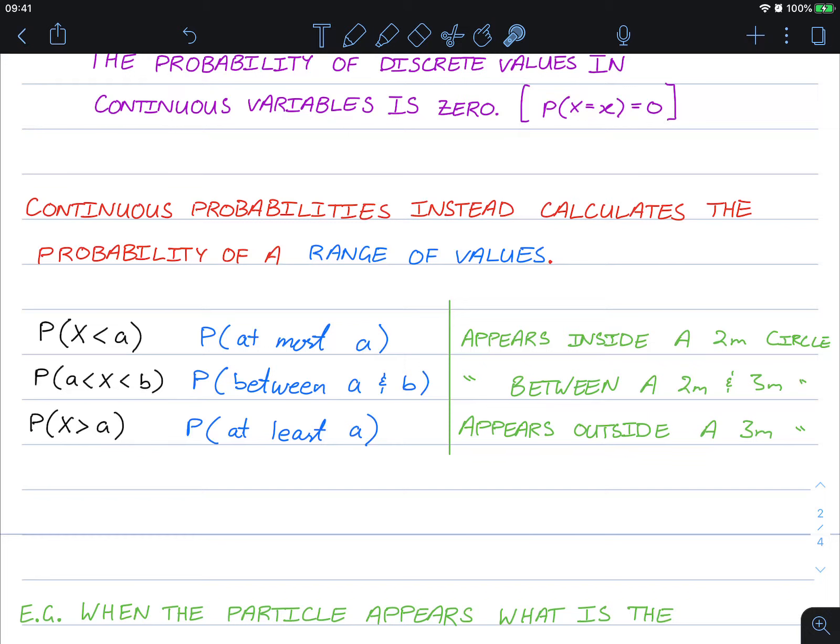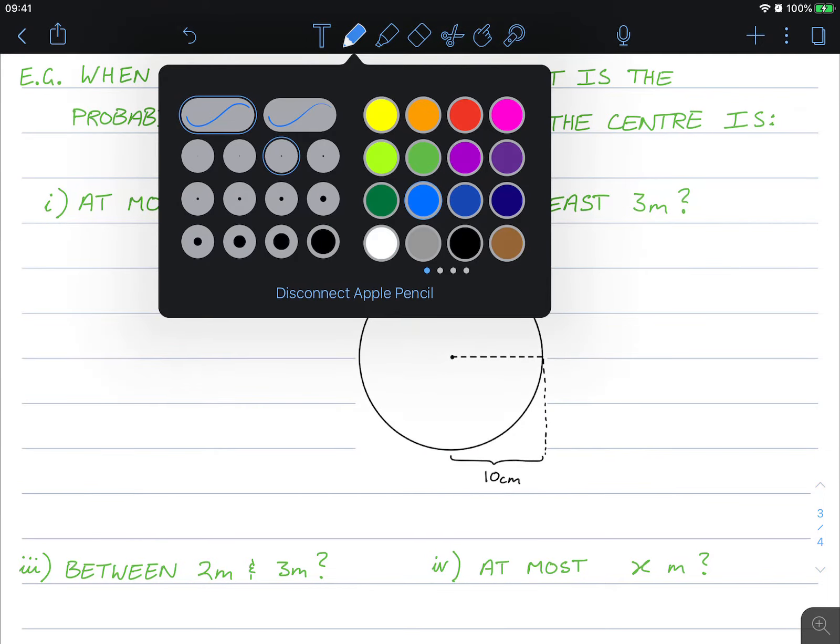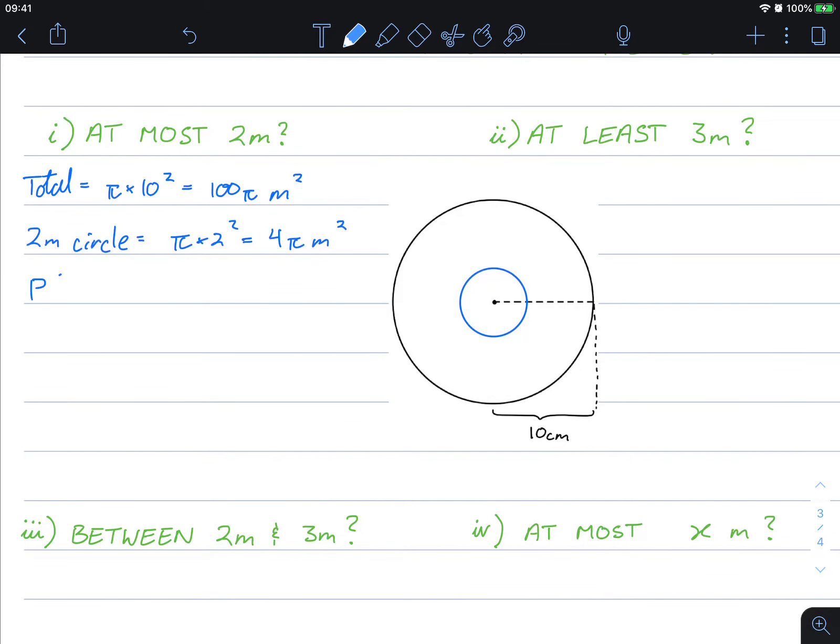Let's change our mentality here. When the particle appears, what is the probability its distance from the center is at most two meters? Well, for this we first need the total probability. The total is equal to π times 10 squared, which is 100π meters squared. And the target we're looking at is the two meter circle, which is π times 2 squared, which is 4π meters squared.